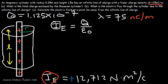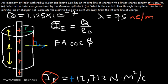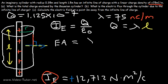The electric field emanating from the line of charge is perpendicular to the surface, forming a 90-degree angle with the surface but parallel to the normal line, so the angle phi equals zero. Since the electric flux is E times A times cosine of the angle between the normal line and the electric field, and cosine zero equals one, we drop the cosine term. Also, Q equals lambda times L, so we replace Q with lambda times L.